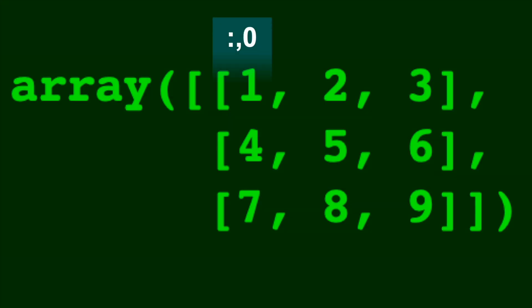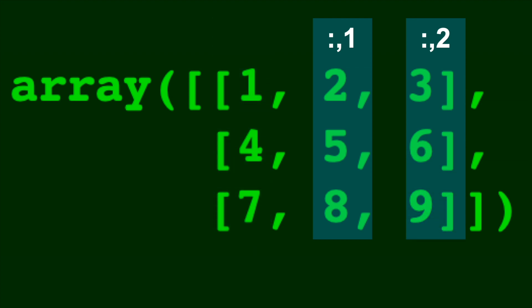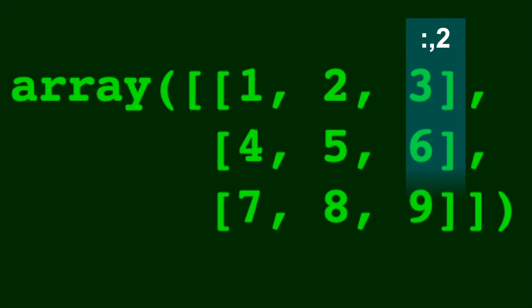If you want a column, the first one is colon, comma, zero. The second one is colon, comma, one. And the third is colon, comma, two. Now why do we need that colon? That's because as we saw at the beginning, you enter the row first. So if you want the entire column, you do colon, comma, column number.